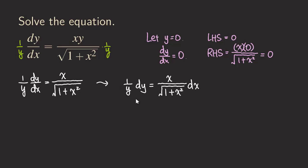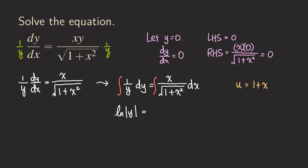Now we can integrate both sides. Integrating the left-hand side first — this one is easy. Integrating 1 over y, we get ln of the absolute value of y. For the right-hand side, we use a simple substitution. We let u equal 1 plus x squared, so du equals 2x dx. As you can see, there is an x and a dx in the integrand.